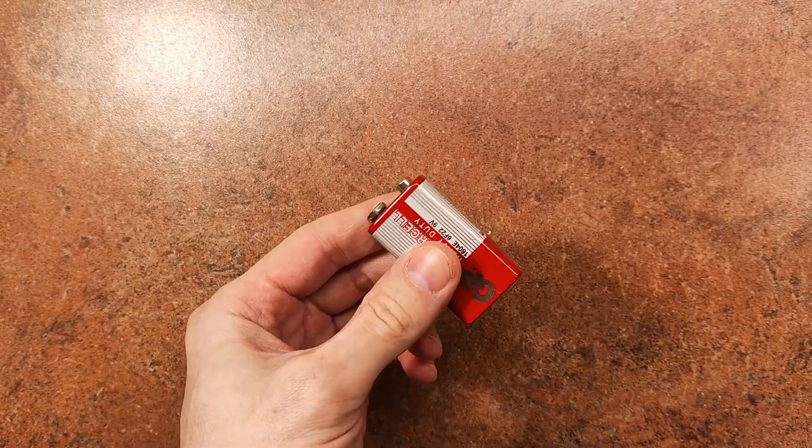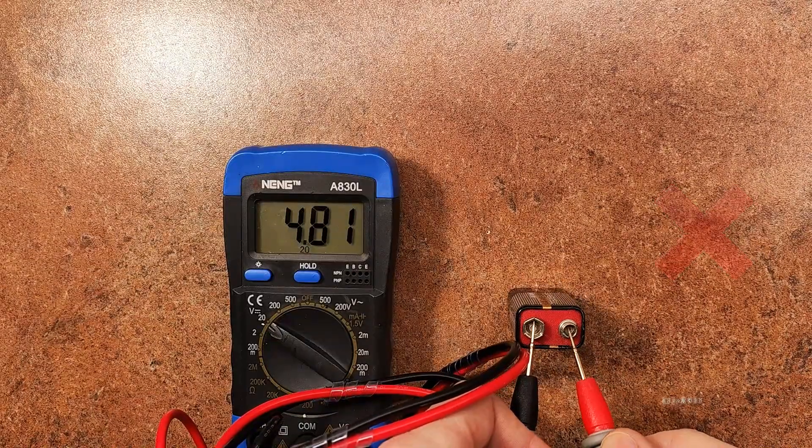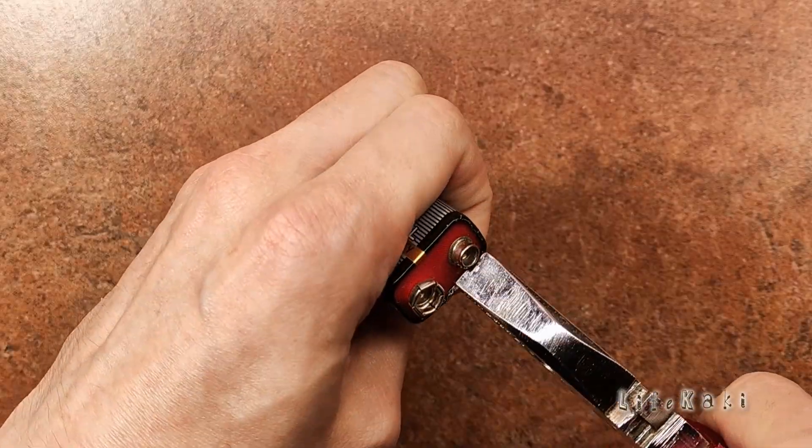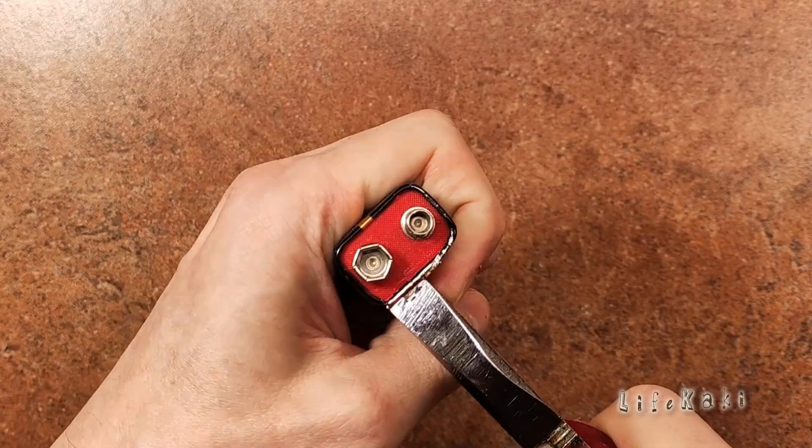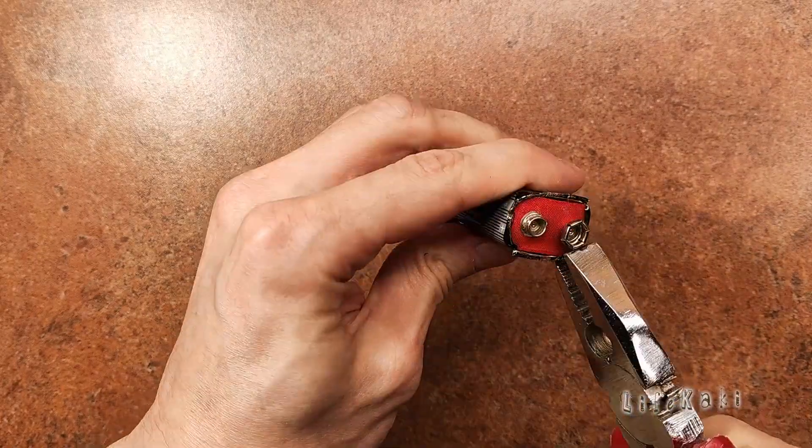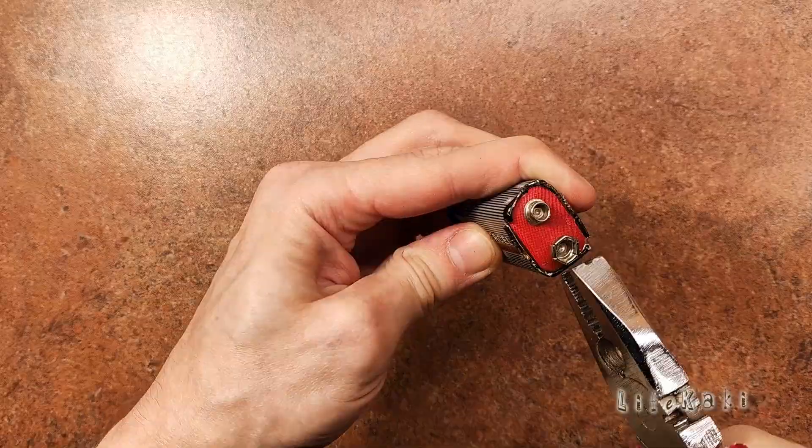Hey guys, today I'll show you how to temporarily power a Wi-Fi router or any other small gadget using a homemade adapter made from an old battery. Let's go! First, carefully open up the battery. Take your time so you don't damage anything.